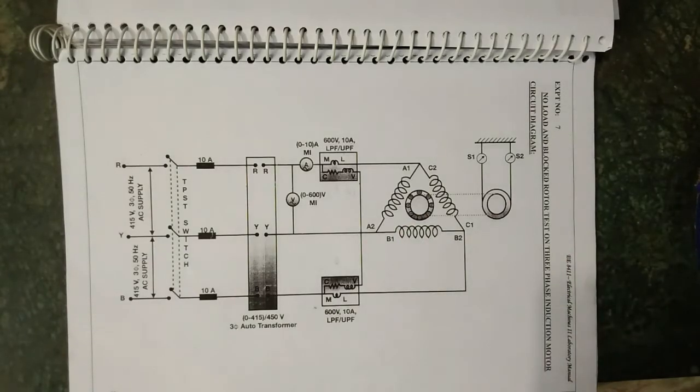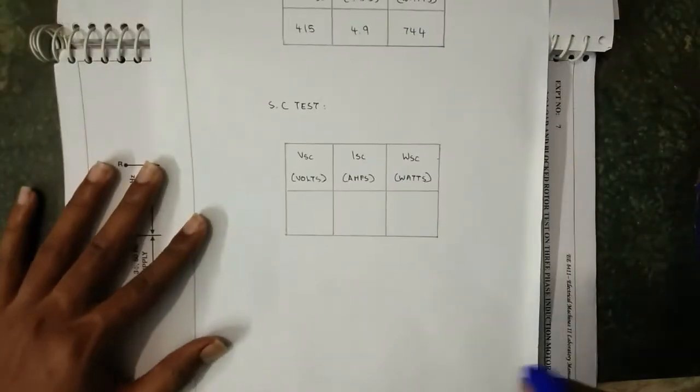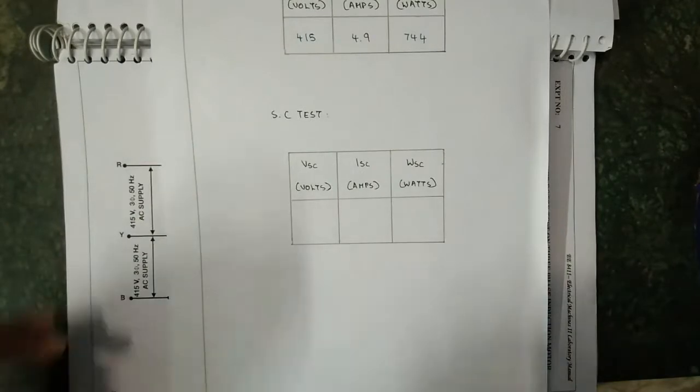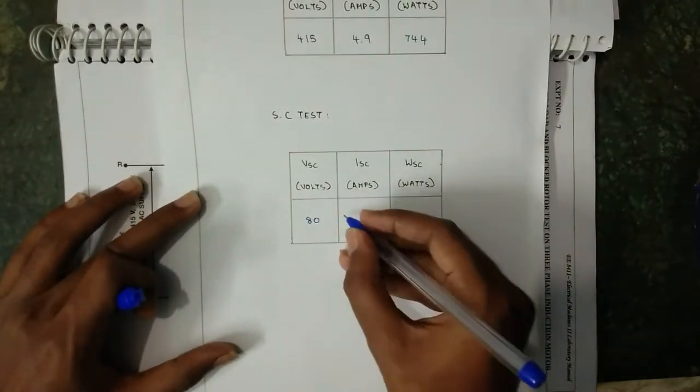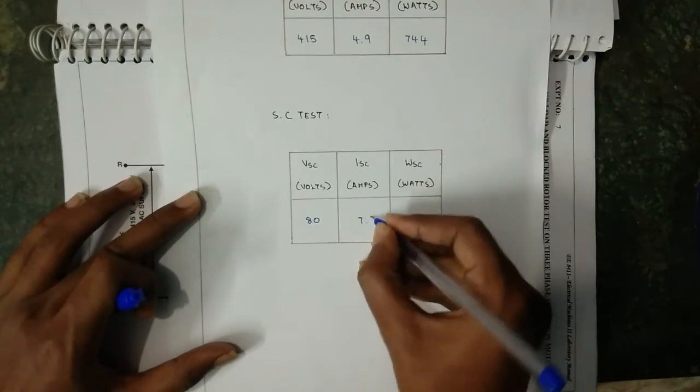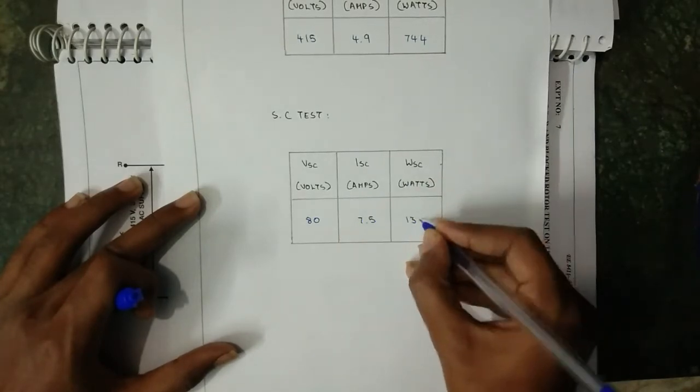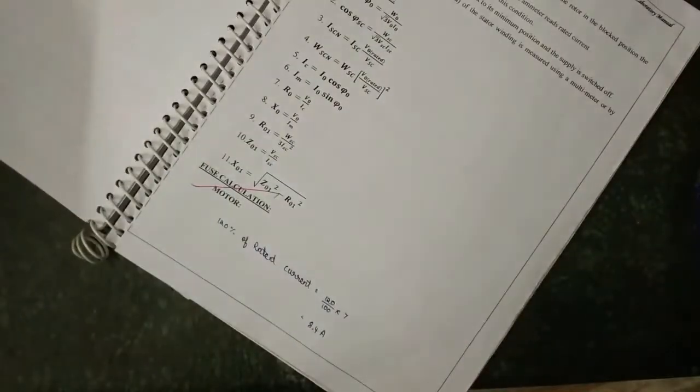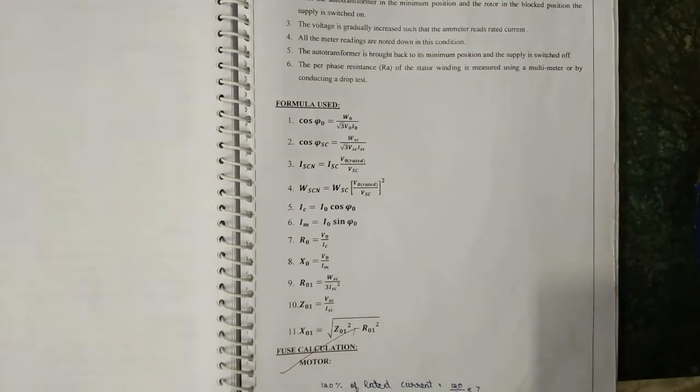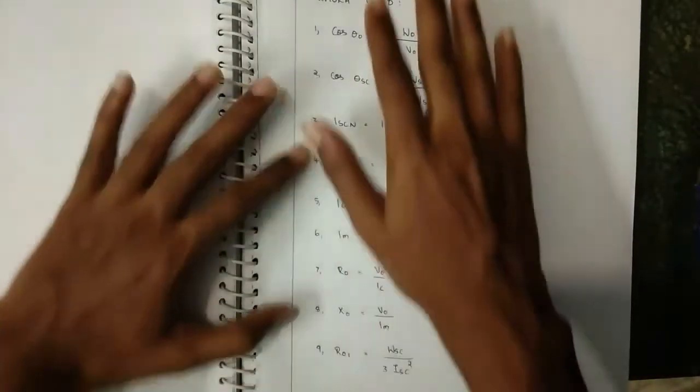The tablet column for blocked rotor test is this one. I'm going to write down the values: voltage is 80, current is 7.5, wattmeter is 1360.